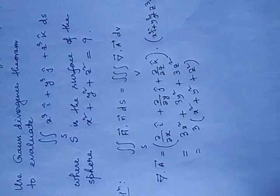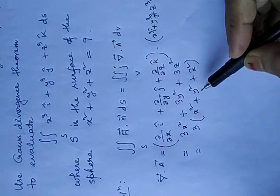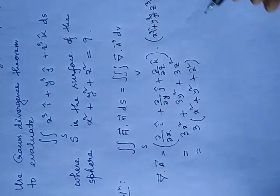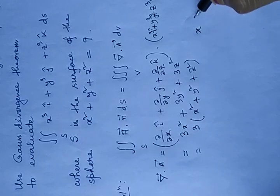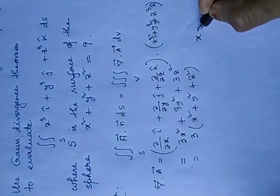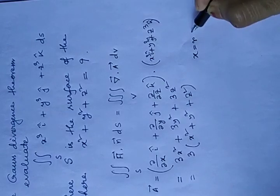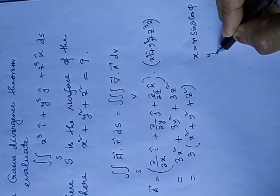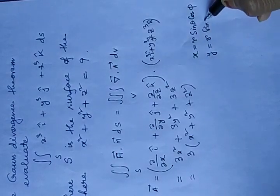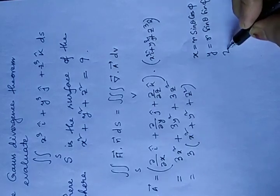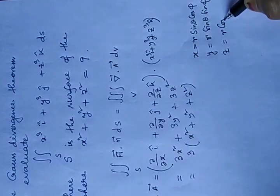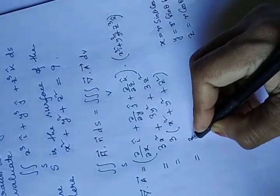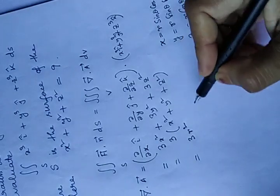We have to transform the Cartesian coordinates in spherical coordinate system. In spherical coordinate system, x equals to r sin theta cos phi, y equals to r sin theta sin phi, z equals to r cos theta. So, if we substitute x, y, z then we will get 3r square.